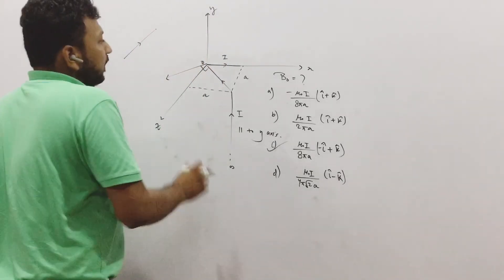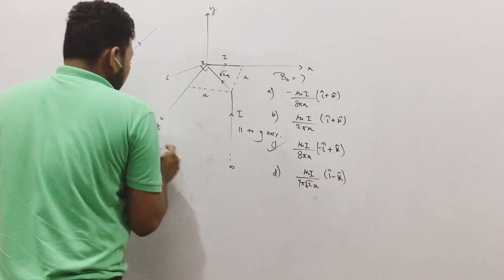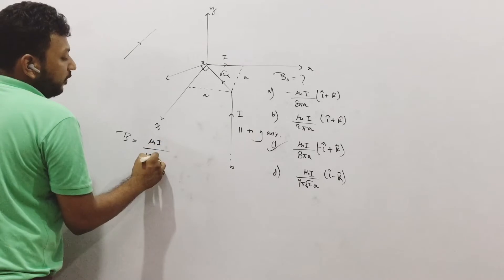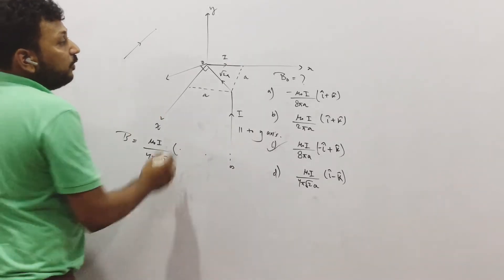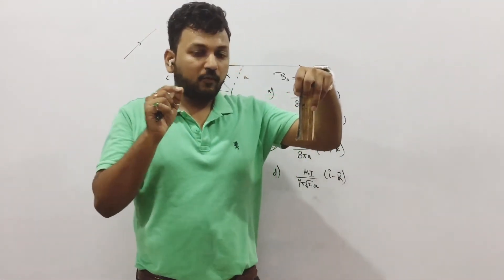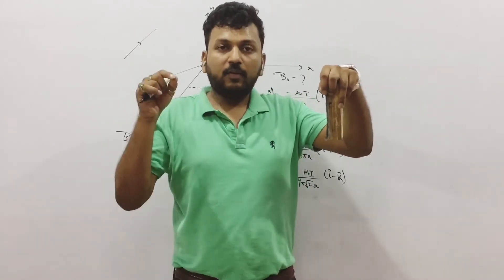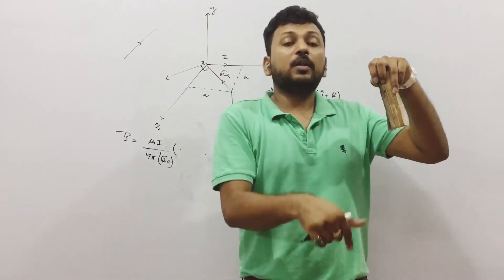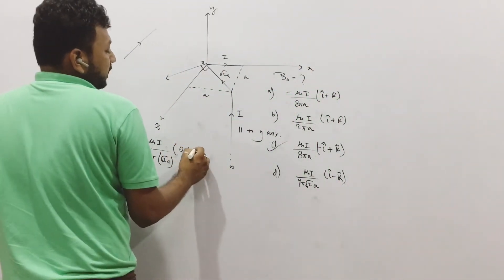First thing. Second thing is the distance from here to here is √2. So magnitude will be μ₀I/(4πr) × (sin α + sin θ). Now if you see from this point, from this point up to the current, one angle is zero and another angle is 90. That means sin 0 plus sin 90.